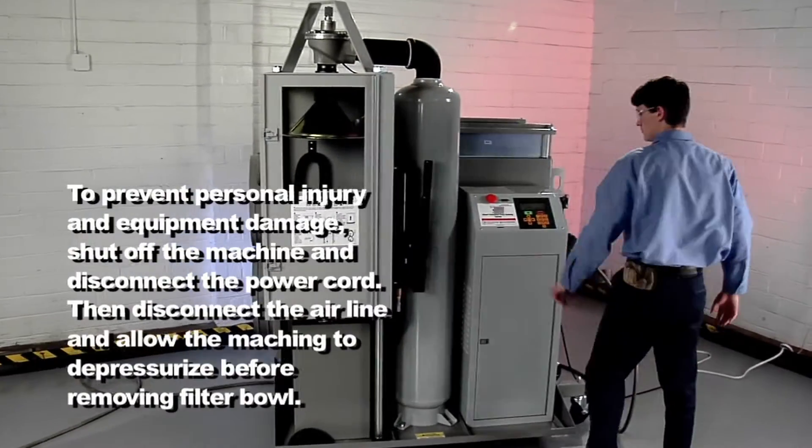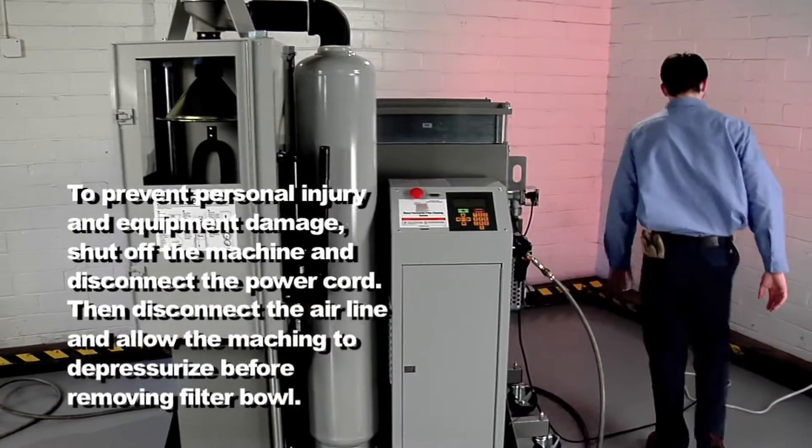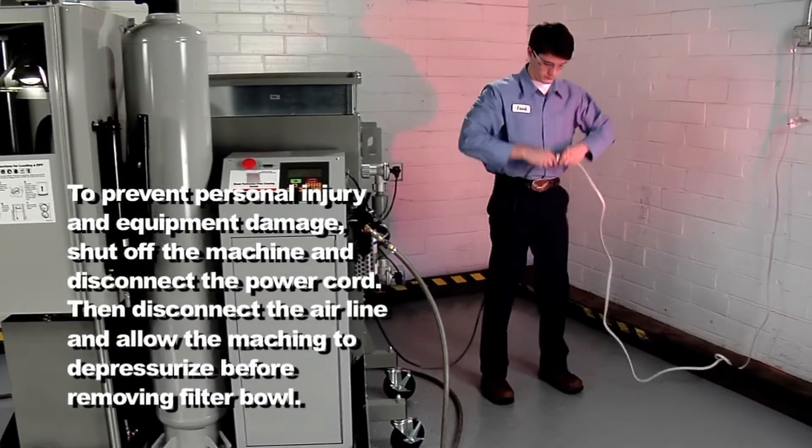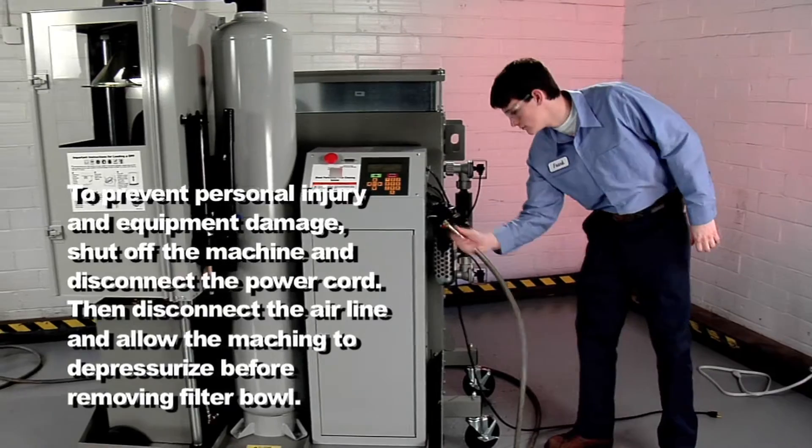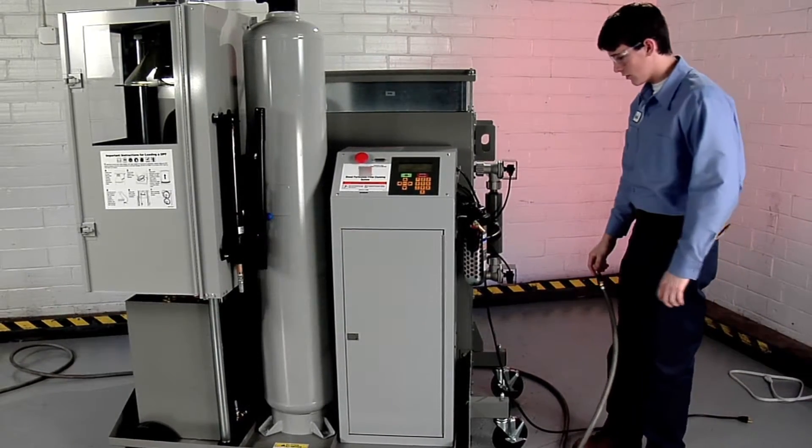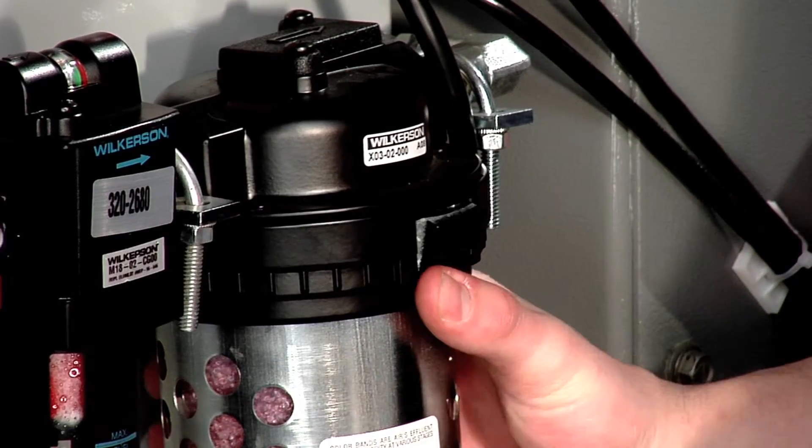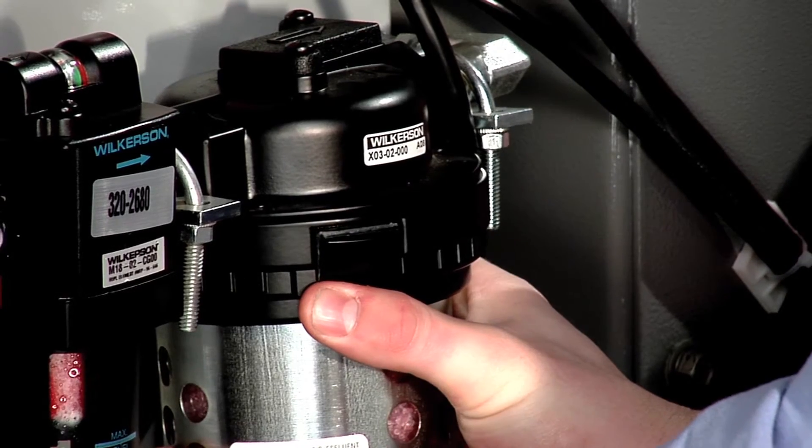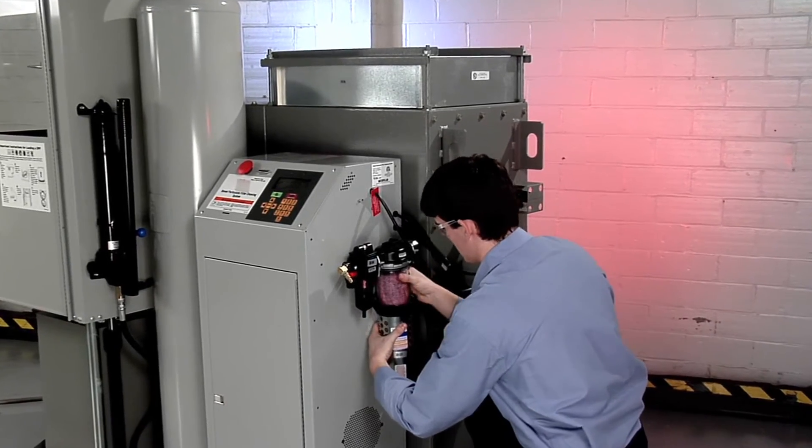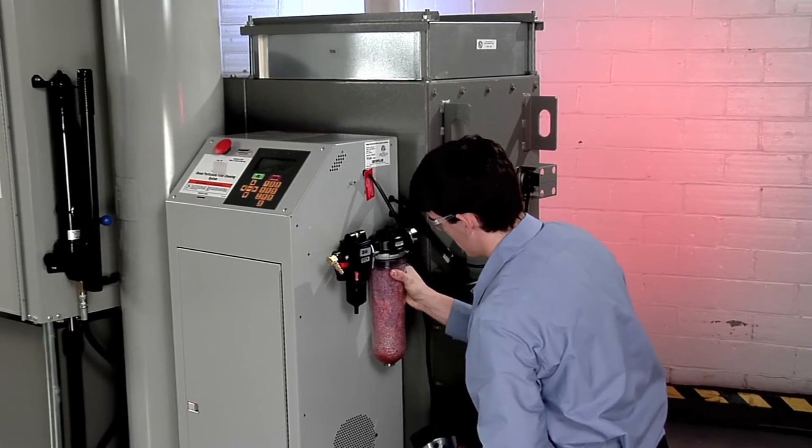Shut off the air flow to the air filter dryer and depressurize the system. Shut off the machine and remove the power cord from the outlet. Remove the bowl from the dryer housing by depressing the locking tab and rotating the locking ring counterclockwise until the bowl can be pulled downward.